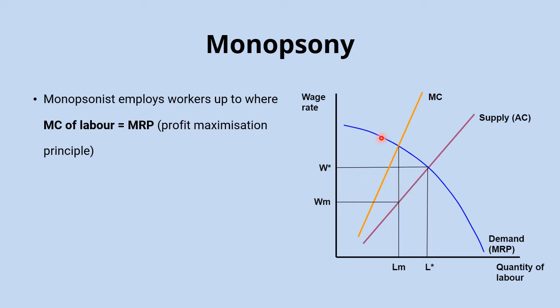Before this point, employing an additional worker increases profits because the marginal revenue product — the additional revenue that worker brings in — is greater than the additional cost of employing them. After this point, the marginal cost exceeds the additional revenue. So it's only at the point where the two meet that profits are maximised. This is exactly the same principle as marginal cost equals marginal revenue for profit maximisation in product markets.